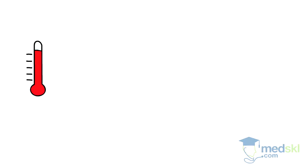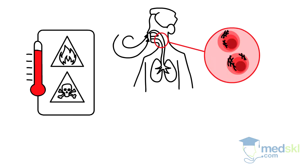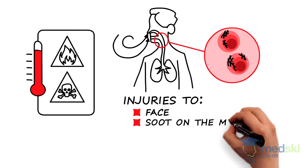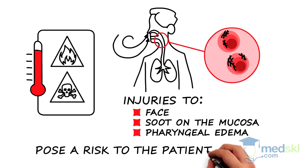In the setting of high temperature thermal and chemical burns, the risk of inhalation injury must be evaluated. Burn injuries to the face, soot on the mucosa and pharyngeal edema are signs that the patient's airway has been exposed to high temperatures and pose a risk to the patient's airway.